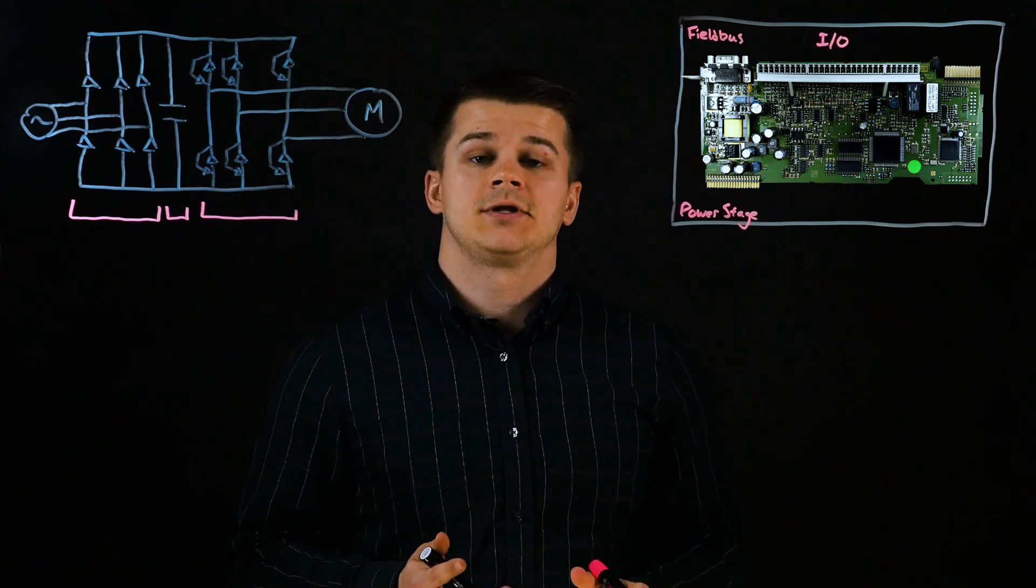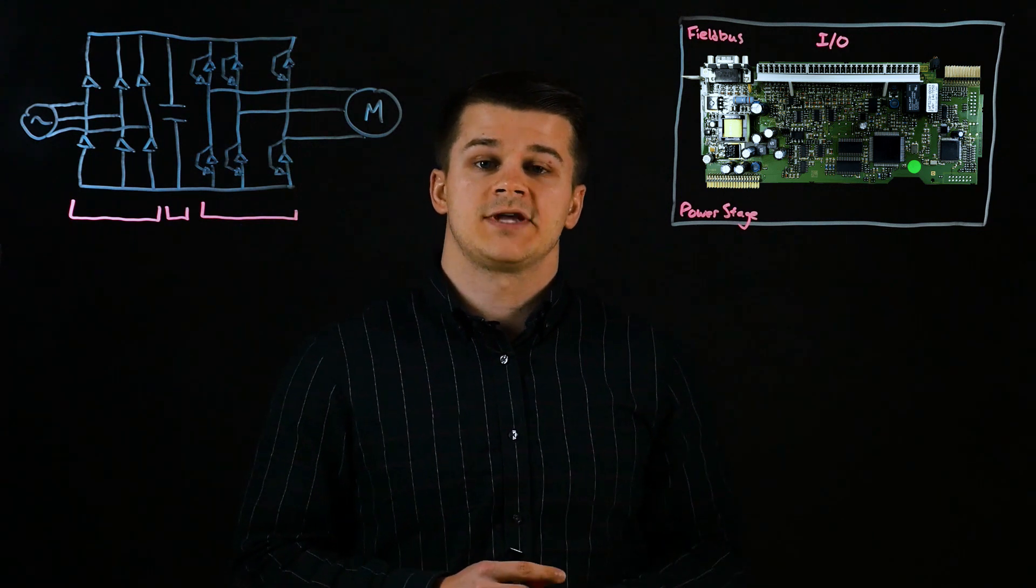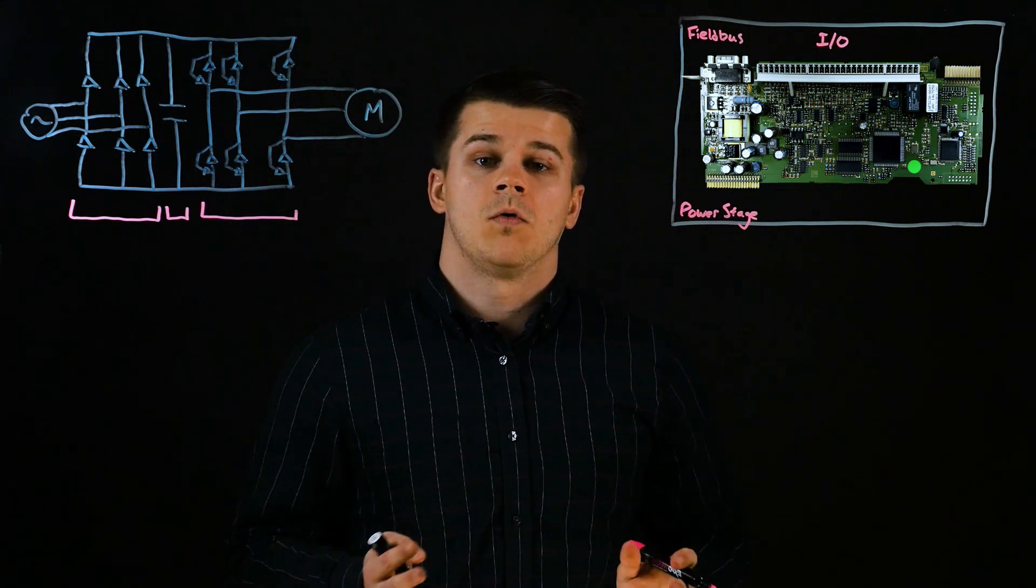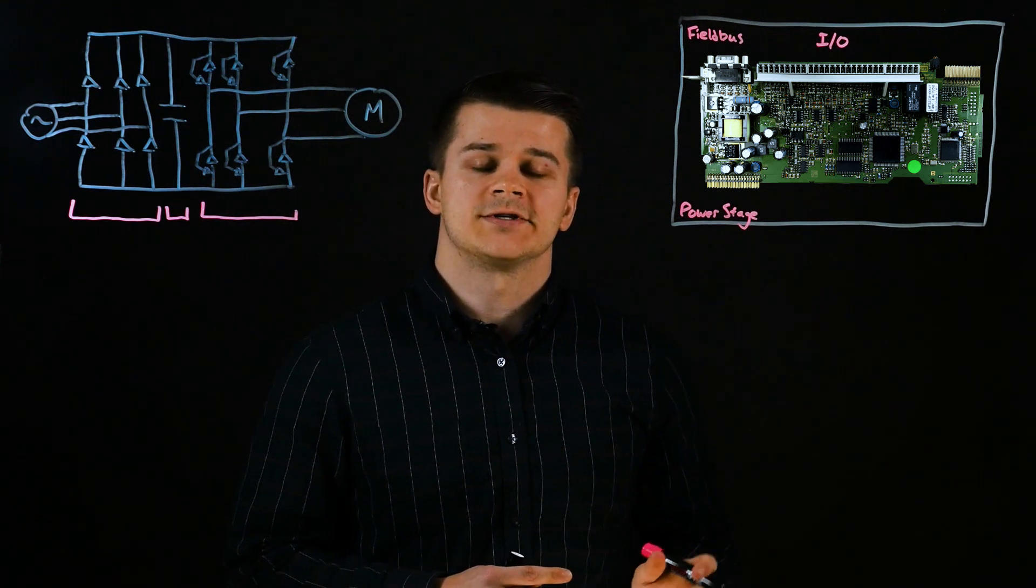Next are the analog and digital I/O. These are used for simple logic based controls. For example, the analog input can take a 0 to 10 volt signal to set the command speed. Or a digital output could signal to the rest of the machine that the motor is at its command speed.